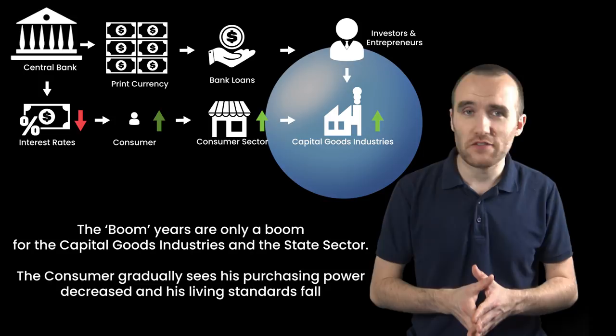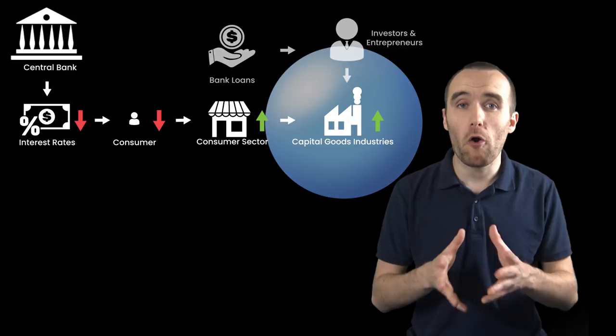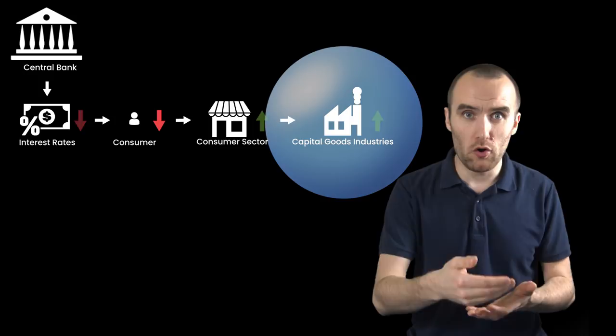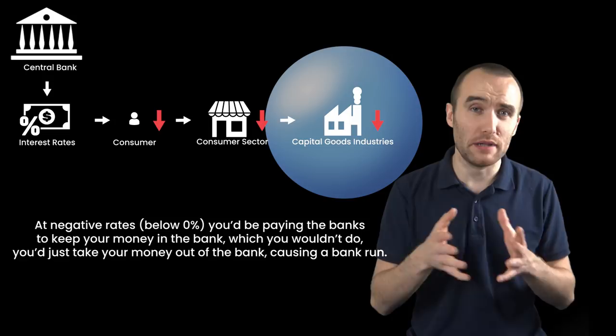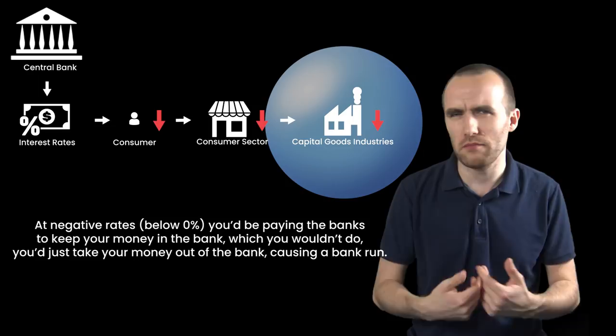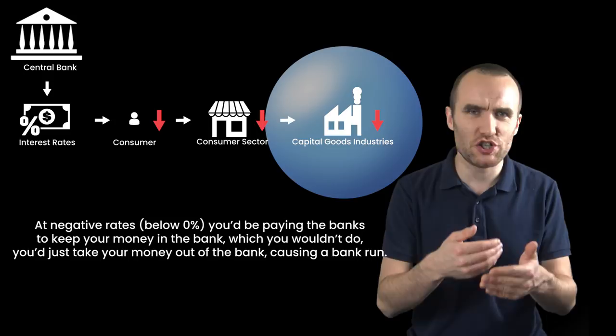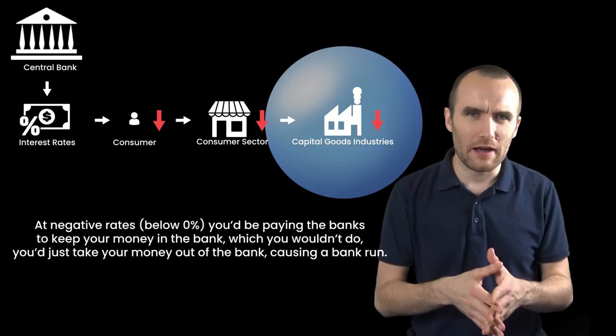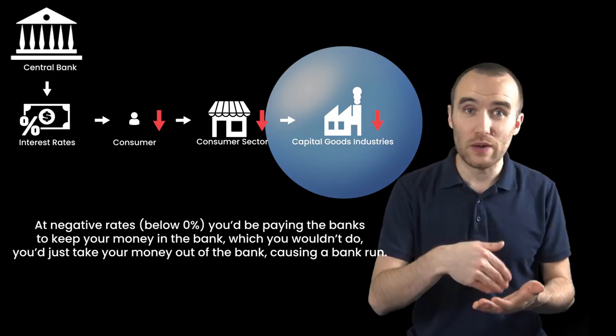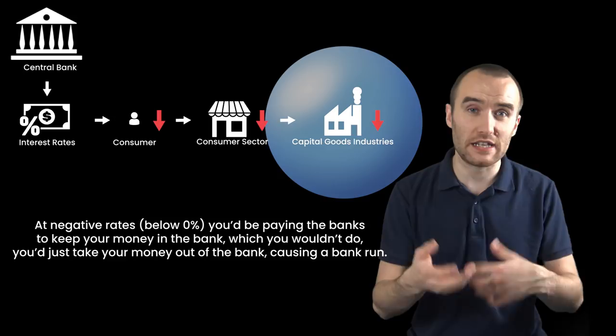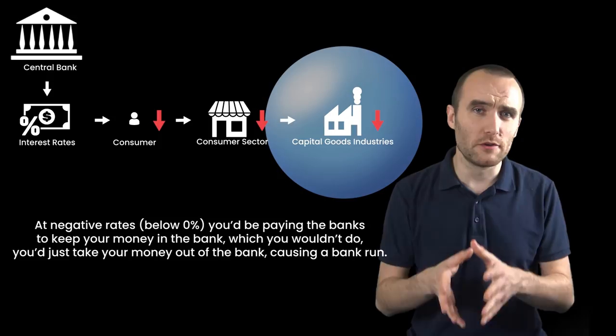Either the government fails to print enough currency for some reason, or they get to a point where they can't lower interest rates anymore. Hypothetically, you shouldn't be able to lower interest rates below 0%, because otherwise they'd be paying people cash to borrow cash from them, which makes no sense. And they'll be charging you to keep your cash in the bank, which you won't do — so you take it out of the bank. And of course, if the consumer takes their cash out of the bank, that would lead to a bank run and an inflation crisis. So in theory, they shouldn't be able to go below zero.